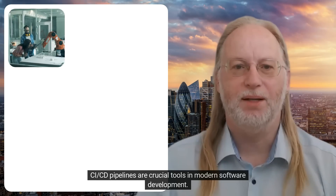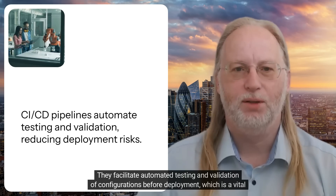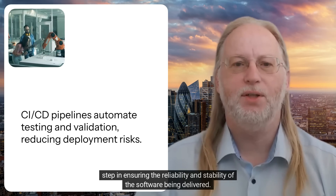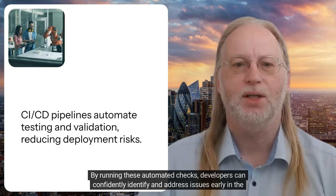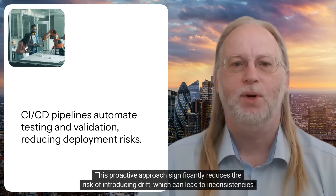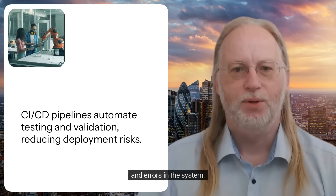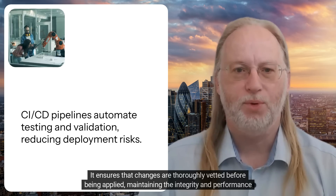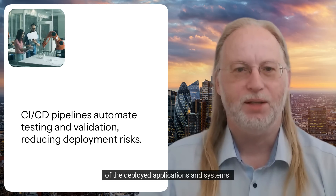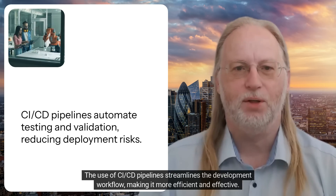CI/CD pipelines are crucial tools in modern software development. They facilitate automated testing and validation of configurations before deployment, which is a vital step in ensuring the reliability and stability of the software being delivered. By running these automated checks, developers can confidently identify and address issues early in the process. This proactive approach significantly reduces the risk of introducing drift, ensuring that changes are thoroughly vetted before being applied and maintaining the integrity and performance of deployed applications.